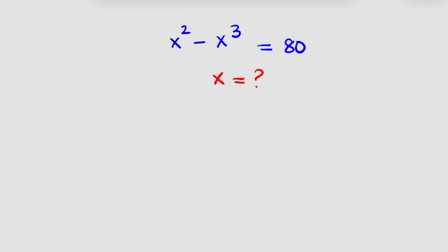To solve this problem, I'm going to transfer 80 to the left-hand side so that I have x squared minus x raised to power 3 minus 80 is equal to 0.